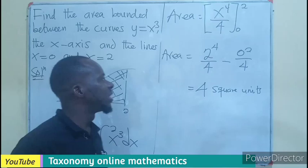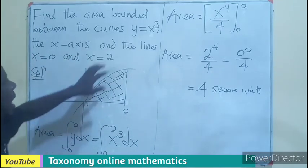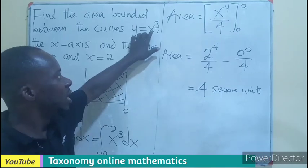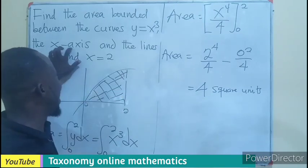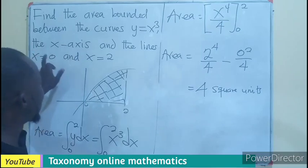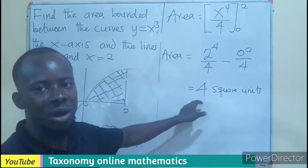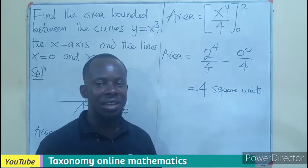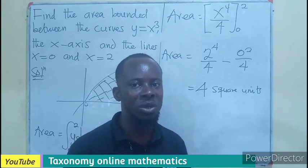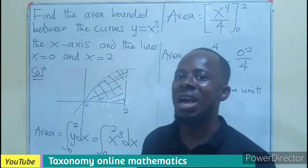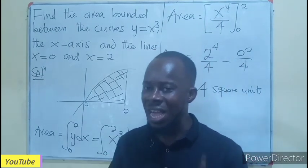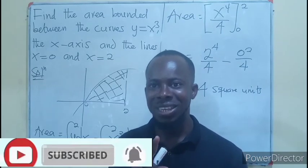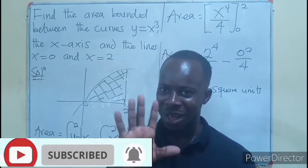So this means that the area bounded by the curve y equals x cubed and the x-axis, with coordinates 0 and 2, will be 4 square units. This is just one of the questions to practice the point we covered in the introduction: how to find the area bounded by a curve and the x-axis. Thank you for watching. Like, share and comment. Bye bye.